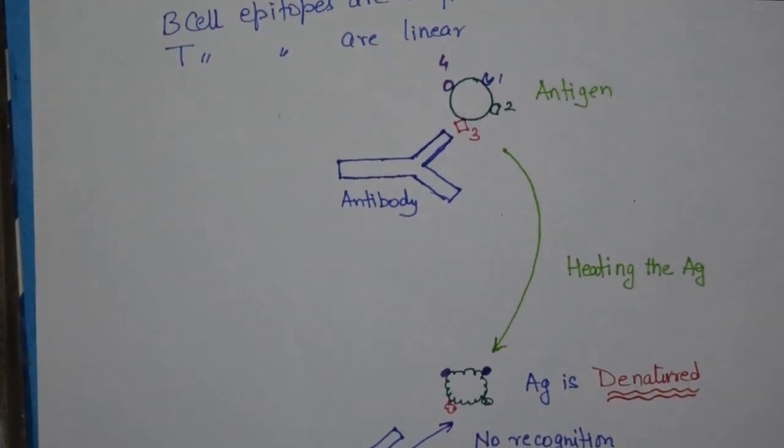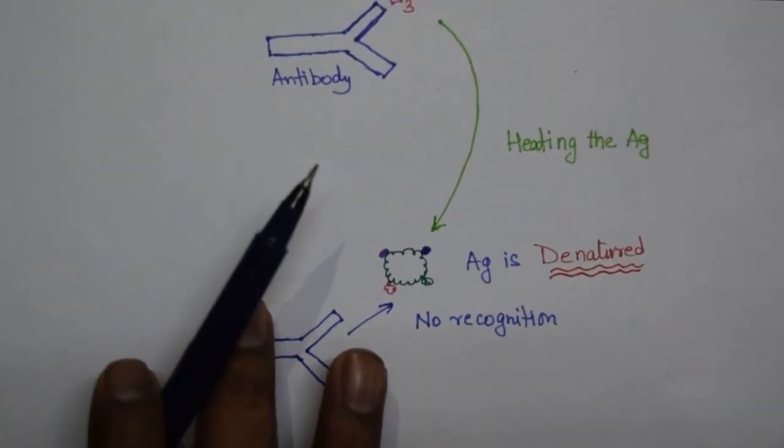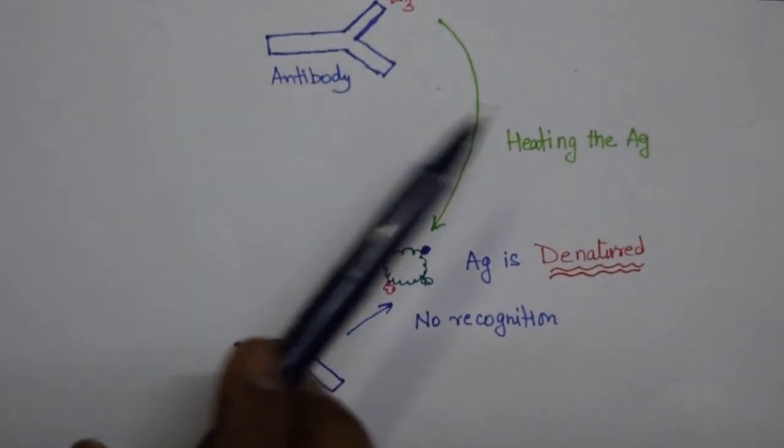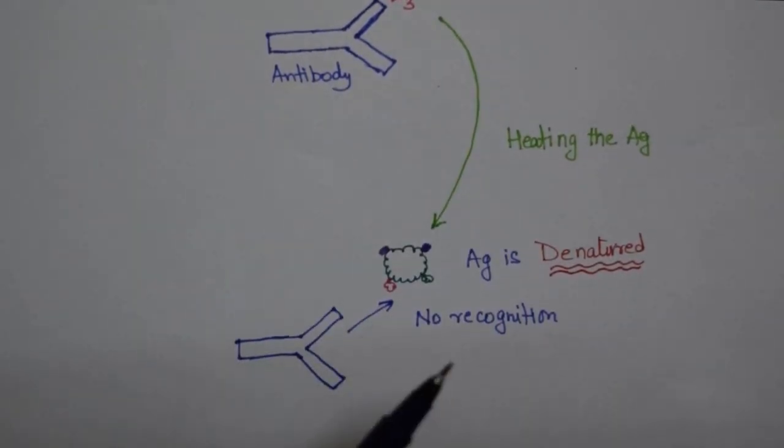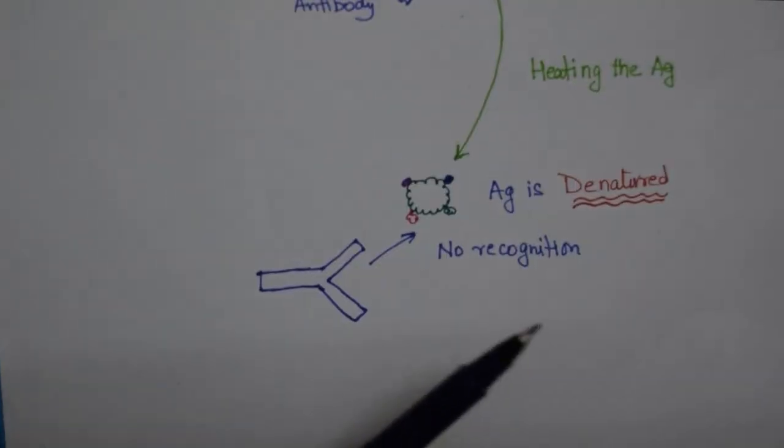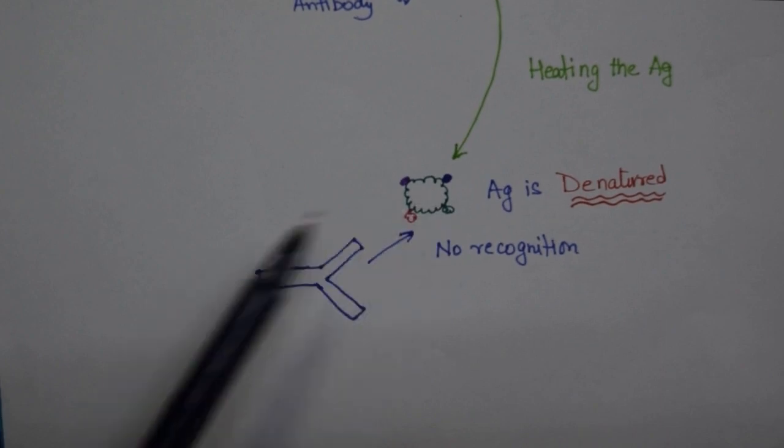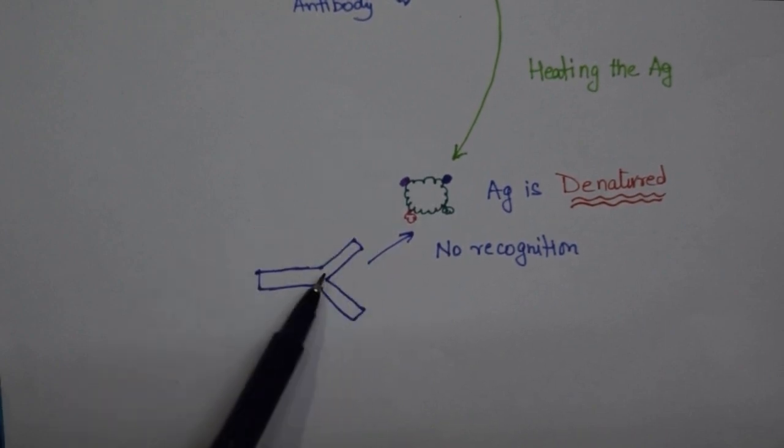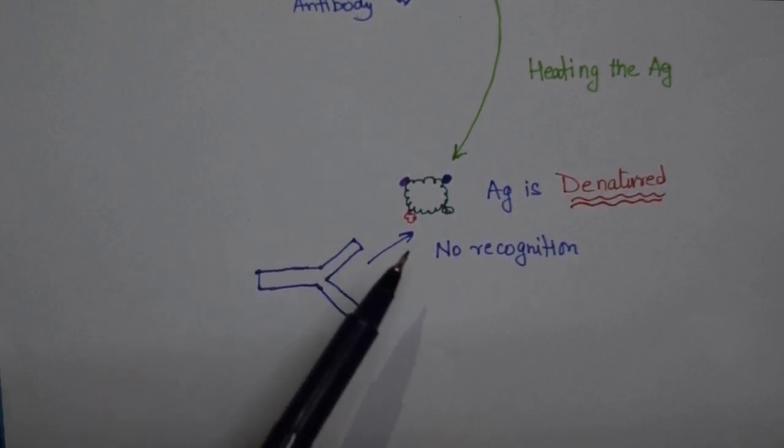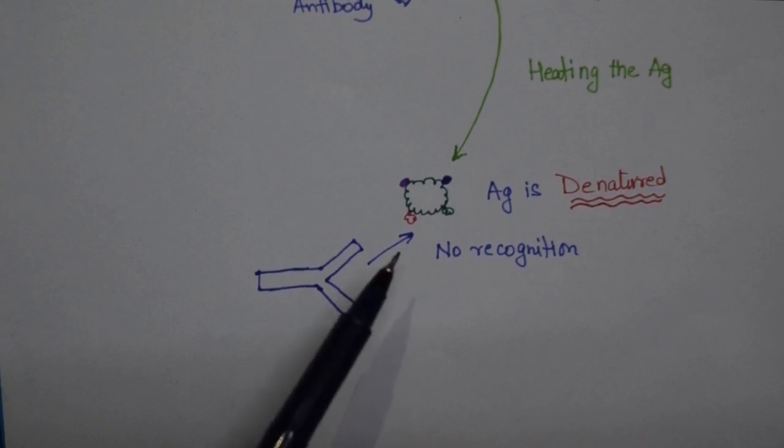Now suppose we heat this antigen. This antigen is heated and it gets denatured. Now the moment the antigen is denatured you can see we have denatured the antigen here. So the recognition between the antibody and the antigen stops. So there is no recognition which happens here.